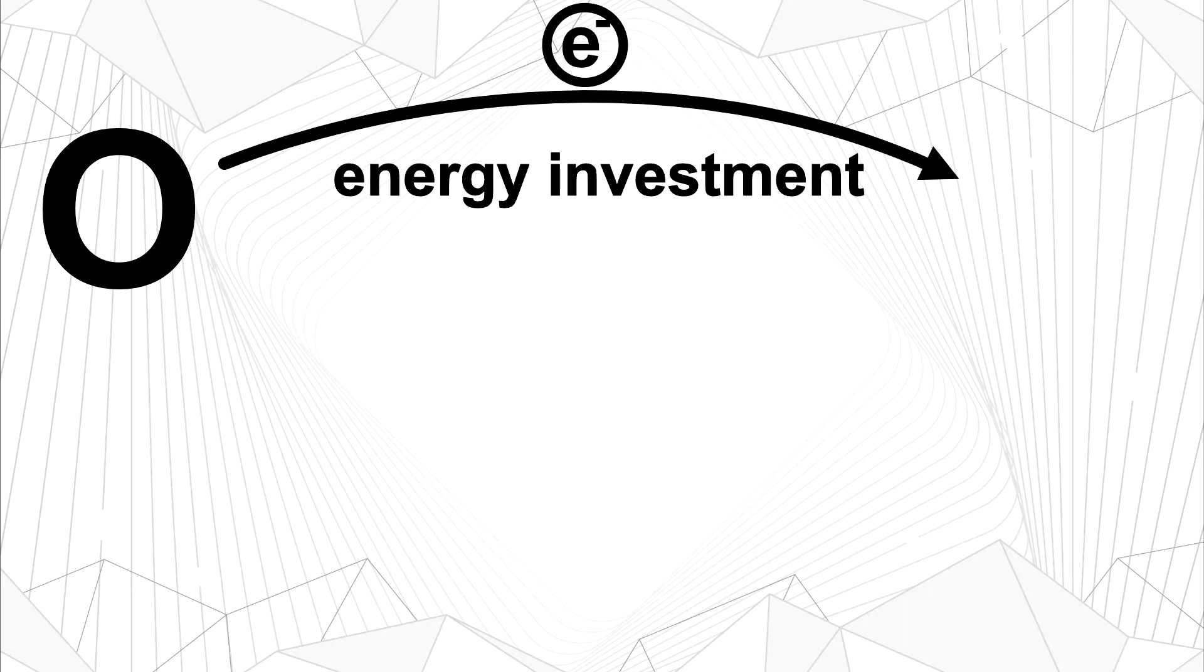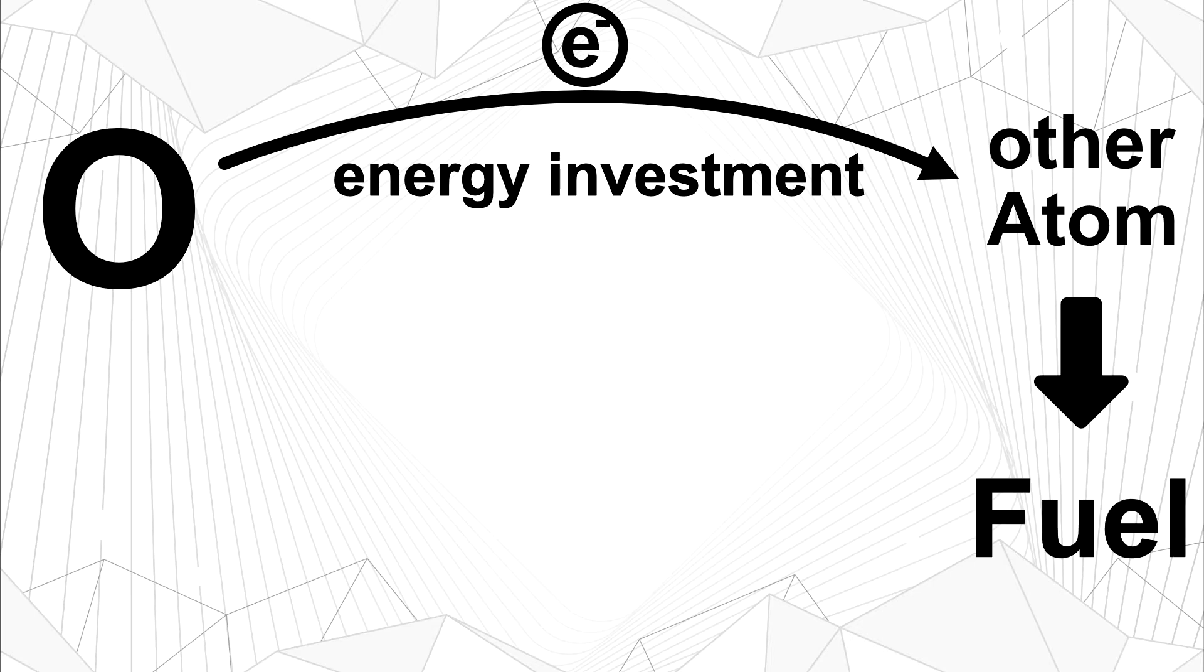Redox reactions can be used to store energy in some sort of fuel. The central element for this is oxygen. We invest energy from a renewable source to take away electrons from oxygen atoms and transfer them onto some other atom. This way, those other atoms will form some sort of fuel. Later, we can transfer electrons back onto oxygen, which will re-release the energy. This is the basic principle behind any sort of fuel.